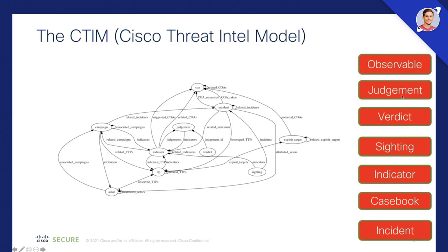A judgment is essentially: 'Hey, this IP address is bad.' A judgment can be about an observable. A verdict is like: 'We have five judgments, and this is our final verdict.' A sighting means: 'Hey, this was seen in my organization — someone reached out to that observable.' This data model is very important because you have hundreds of security products that all use their own data model, and if you want to be a platform you need a standardized, reliable model to translate everything into. In SecureX we translate back and forth into CTIM, which allows cross-referencing because everyone speaks the same language.